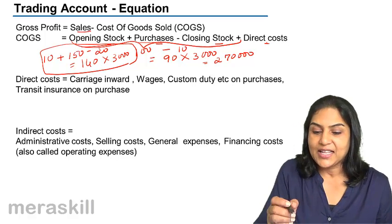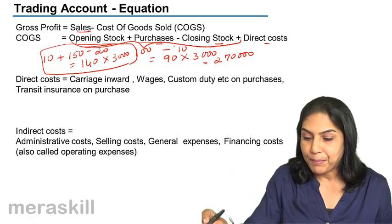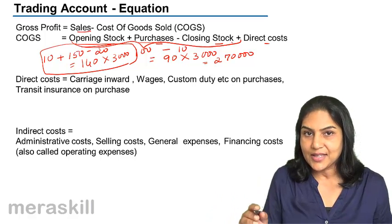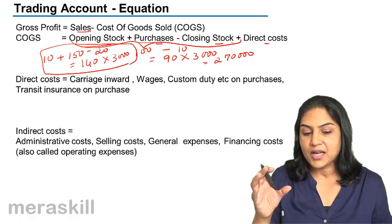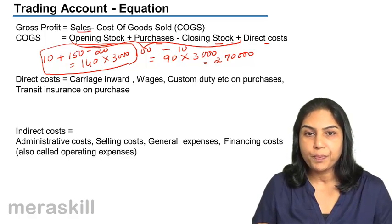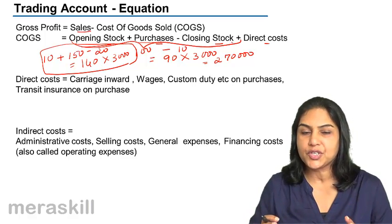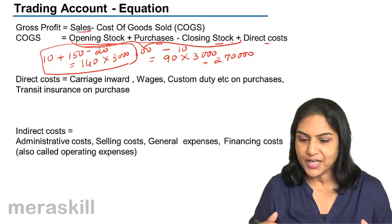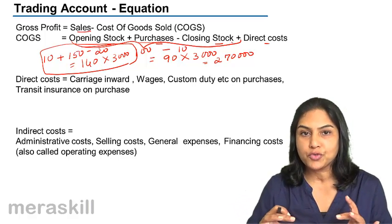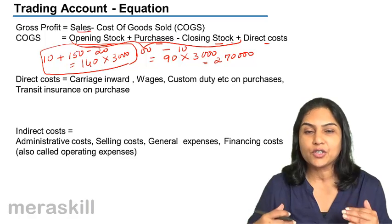So, what is gross profit? Sales minus cost of goods sold. Cost of goods sold is opening stock plus purchases minus closing stock — that is, the total goods available for sale minus the goods not sold — plus direct costs, all costs incurred in order to bring the goods into the shop. Gross profit establishes the core profitability of the business.